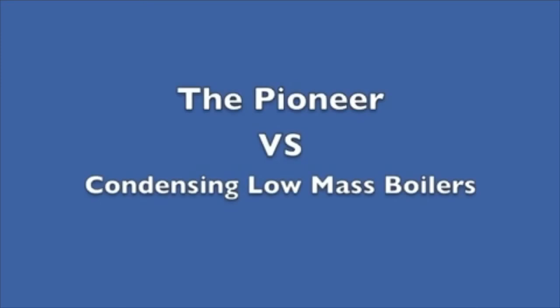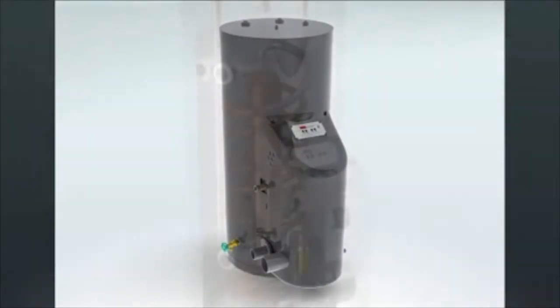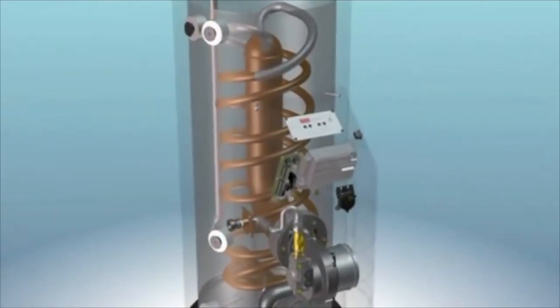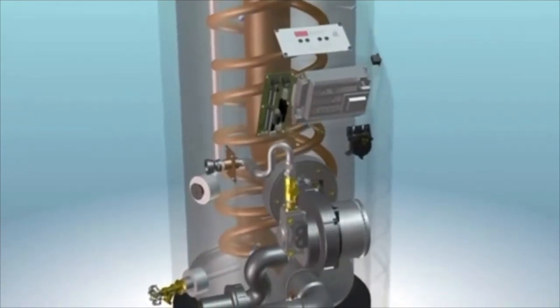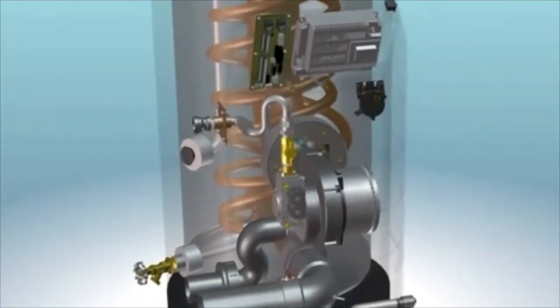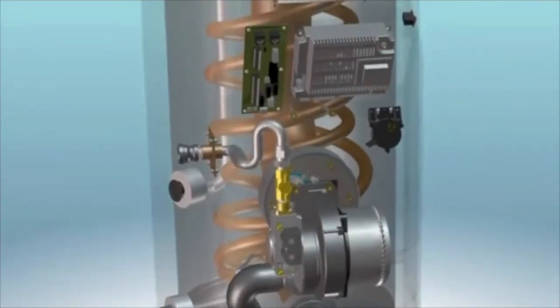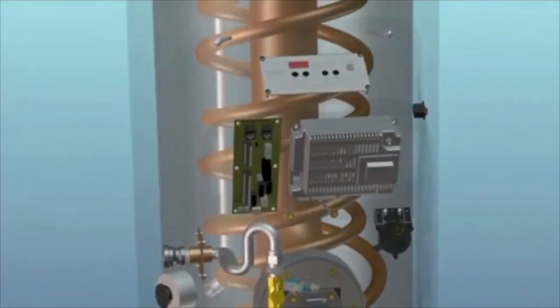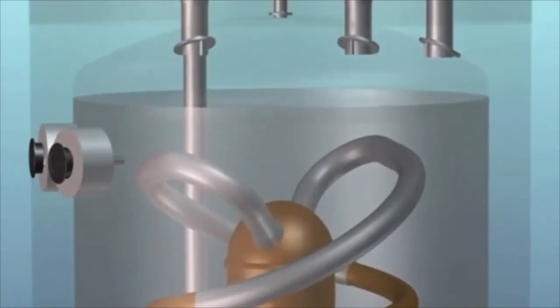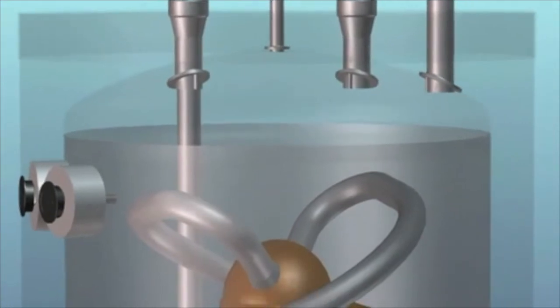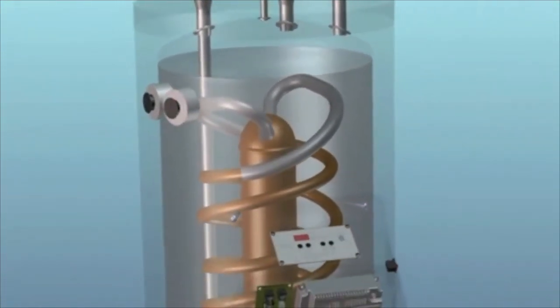The Pioneer versus condensing low mass boilers: to put it simply, the Pioneer has all the major features, including the same highly efficient combustion and controls technology of the leading low mass condensing boilers. Having ample thermal mass to compensate, the Pioneer does not ever require primary secondary piping setup. The Pioneer is piped like a tank type water heater or a mid-efficiency cast iron boiler. Many of the components such as the boiler pump, as well as the boiler loop piping and labor required on condensing low mass boilers, are eliminated.